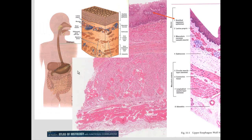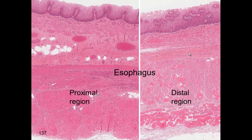Beyond the tongue is the esophagus, which has stratified squamous epithelium on the surface, lamina propria with connective tissue below, a muscularis mucosa, a submucosa, a muscularis externa with two components, and adventitia.